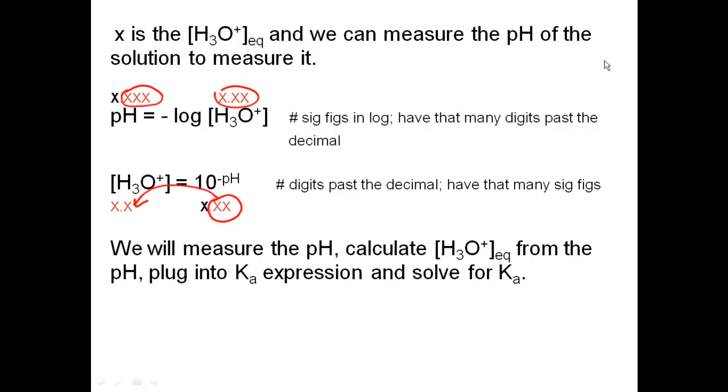Now, what we're going to do is we're going to measure the pH, so then we're going to calculate the hydronium ion at equilibrium from that pH, plug that into our Ka expression, and then solve for Ka. So, the equation that we care about in this problem is going to be the second one. Now, we're going to measure the pH with a pH meter, and then we're going to calculate hydronium ion. That hydronium ion, then, will give us our X, which we're going to plug into our Ka expression.